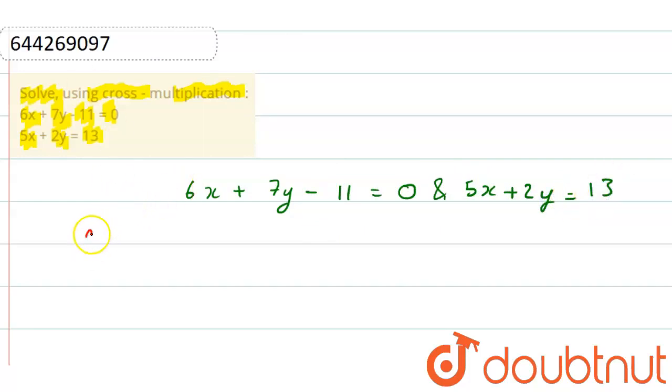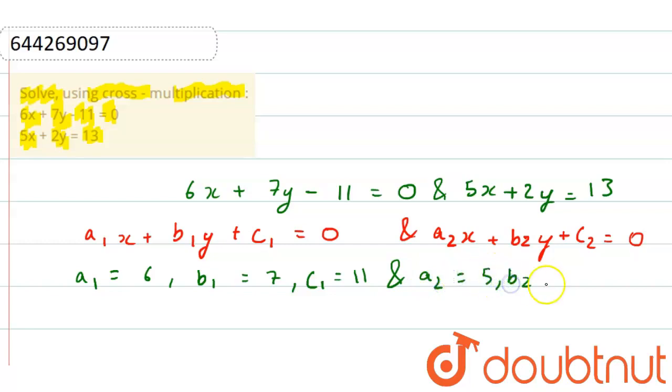Here, the given equations are 6x plus 7y minus 11 equals 0 and 5x plus 2y equals 13. Now, comparing with a1x plus b1y plus c1 equals 0 and second equation with a2x plus b2y plus c2 equals 0, we have a1 as 6, b1 as 7, c1 as minus 11, and in this equation we have a2 as 5, b2 as 2, and c2 as minus 13.